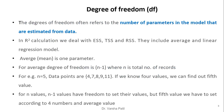Now we will see the concept of degree of freedom. Degree of freedom often refers to the number of parameters in the model that are estimated from the data. In r-square calculation, we deal with ESS, TSS, and RSS. They include average and linear regression model. Average is one parameter.